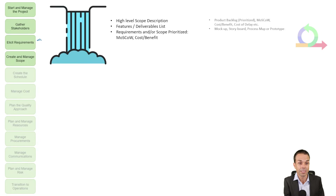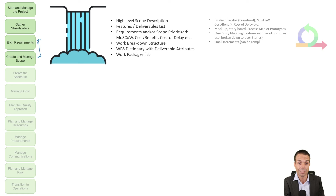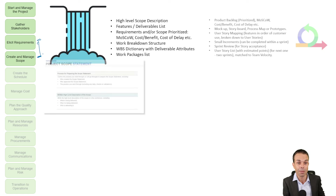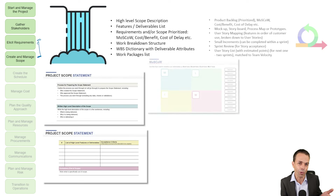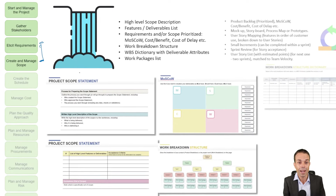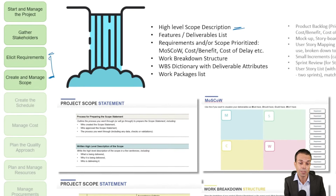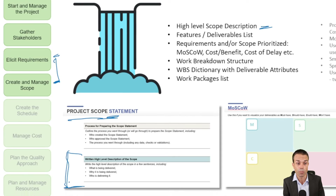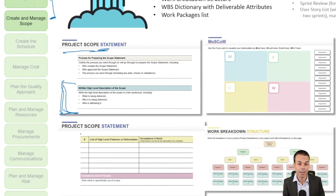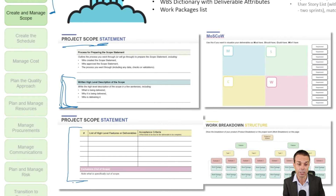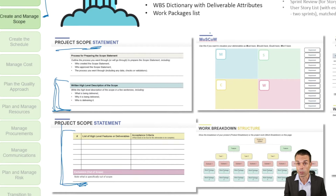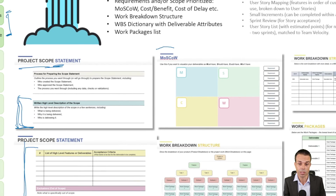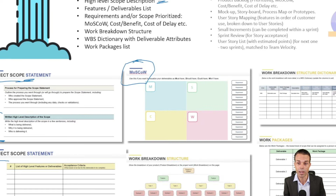Now we've got requirements, but we want to turn those into the scope and deliverables for our project. On a Waterfall project we'll have a high-level scope description — just a written scope statement, usually a sentence or a paragraph — and we break that down into a high-level list of features and the exclusions, what's out of scope. Then we prioritize those things using different methods: MoSCoW is one way, cost-benefit is another, the cost of delay is another. There are many different ways to prioritize.